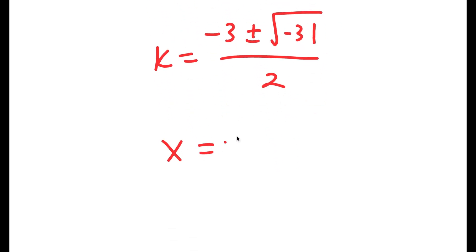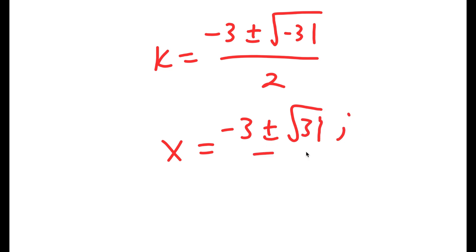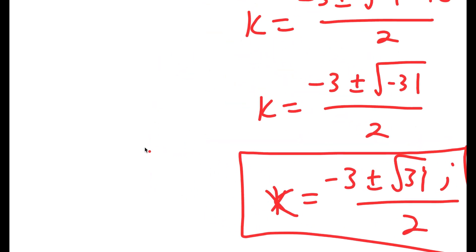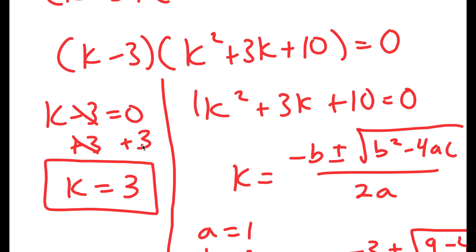I can rewrite this as negative 3 plus or minus the square root of 31 times i, all over 2, because i is equal to the square root of negative 1. So these are two more solutions of k, giving us three solutions total.